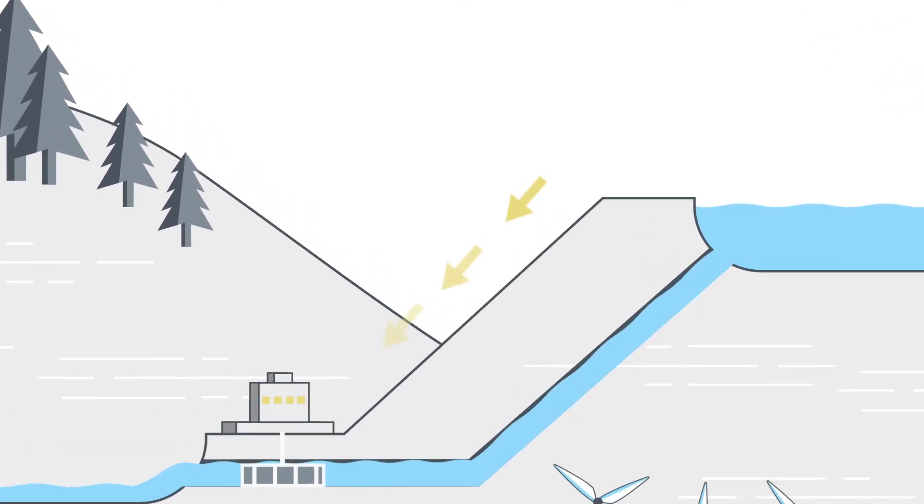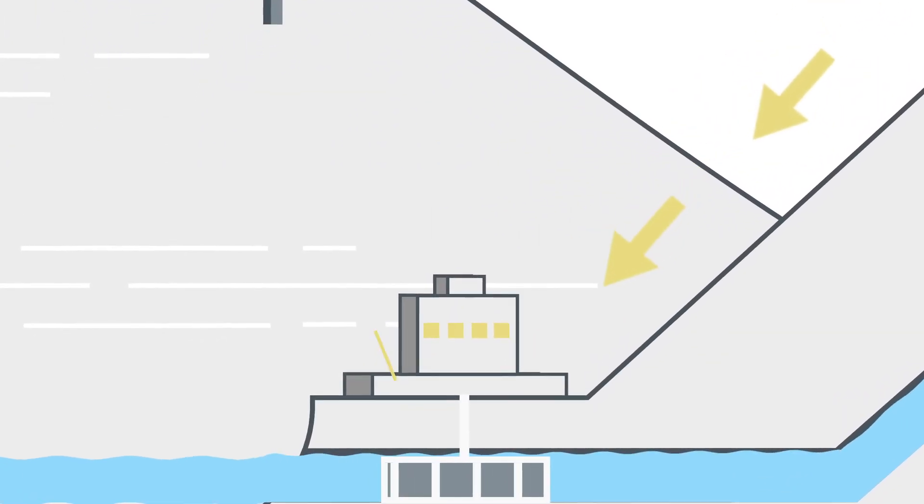Water released from the upper reservoir flows downhill to the lower reservoir and spins turbines connected to large generators, which produce electricity.